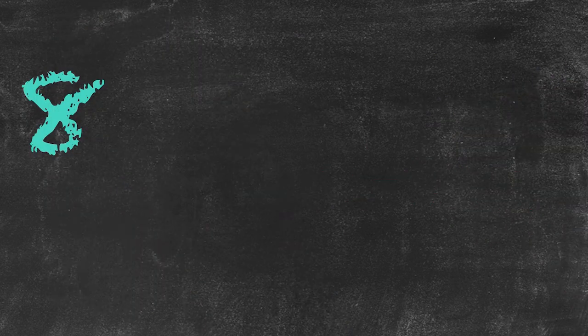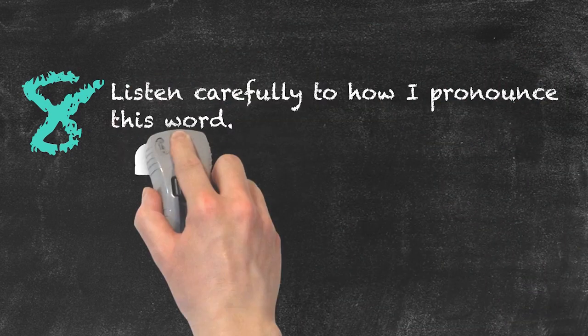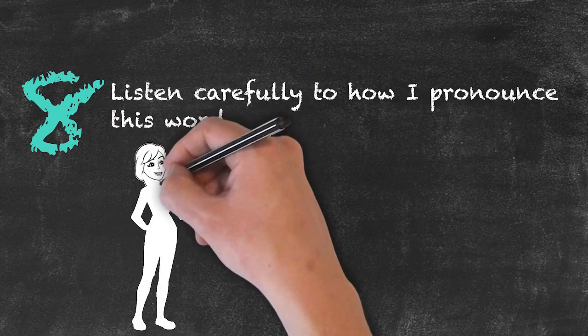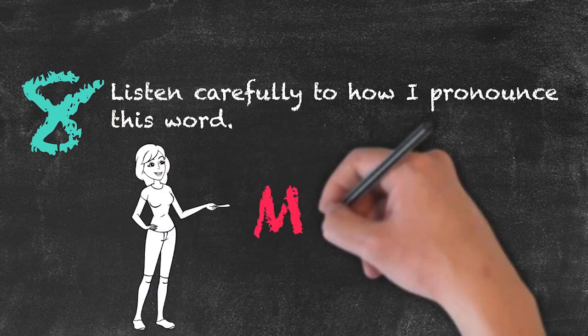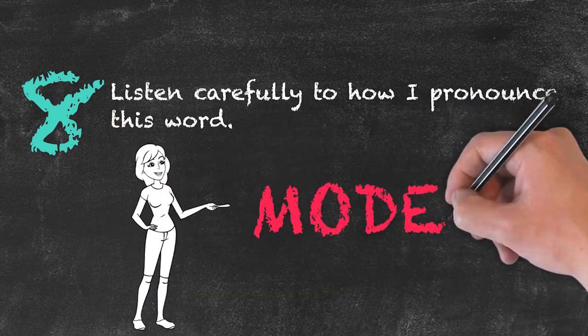Example number eight: the teacher may say something like, 'Okay, now listen carefully to the way in which I pronounce this word.' So what the teacher is doing in this case is actually modeling the language, acting as a model.